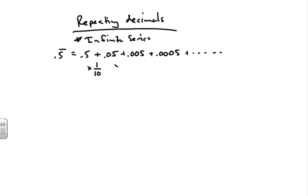If I multiply this by 0.1 or 1 tenth, I would get 0.05. If I multiply this other one by 0.1 or 1 tenth, I get 0.005 and so on and so forth. And since I am multiplying everything by a repeated value, we understand that is exponential, which makes it geometric. So actually every repeating decimal is a geometric infinite series.